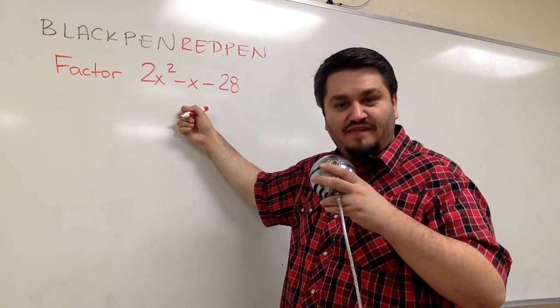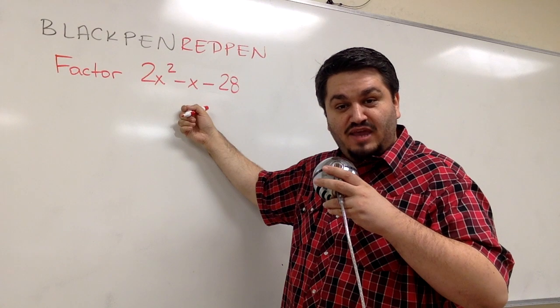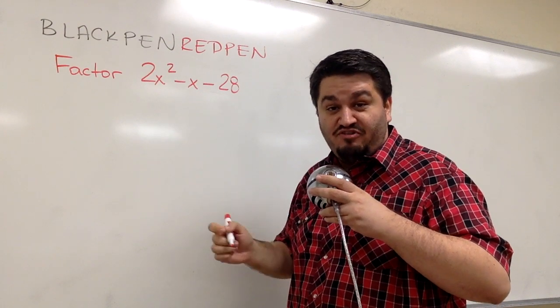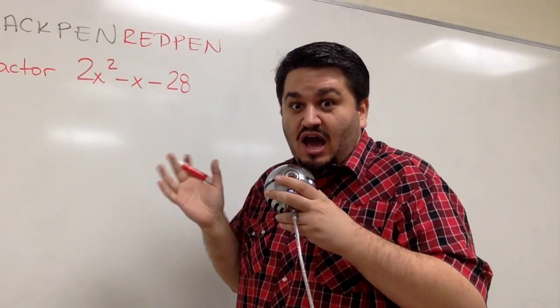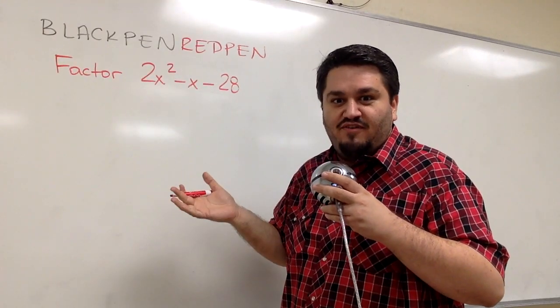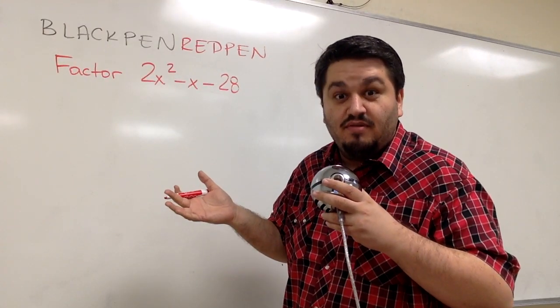We're going to factor this expression, 2x squared minus x minus 28. Notice here that our coefficient a, the coefficient of the quadratic term, is not one. Oh no! What do I do? You're going to factor. You're going to get through this. It's going to happen. I promise.